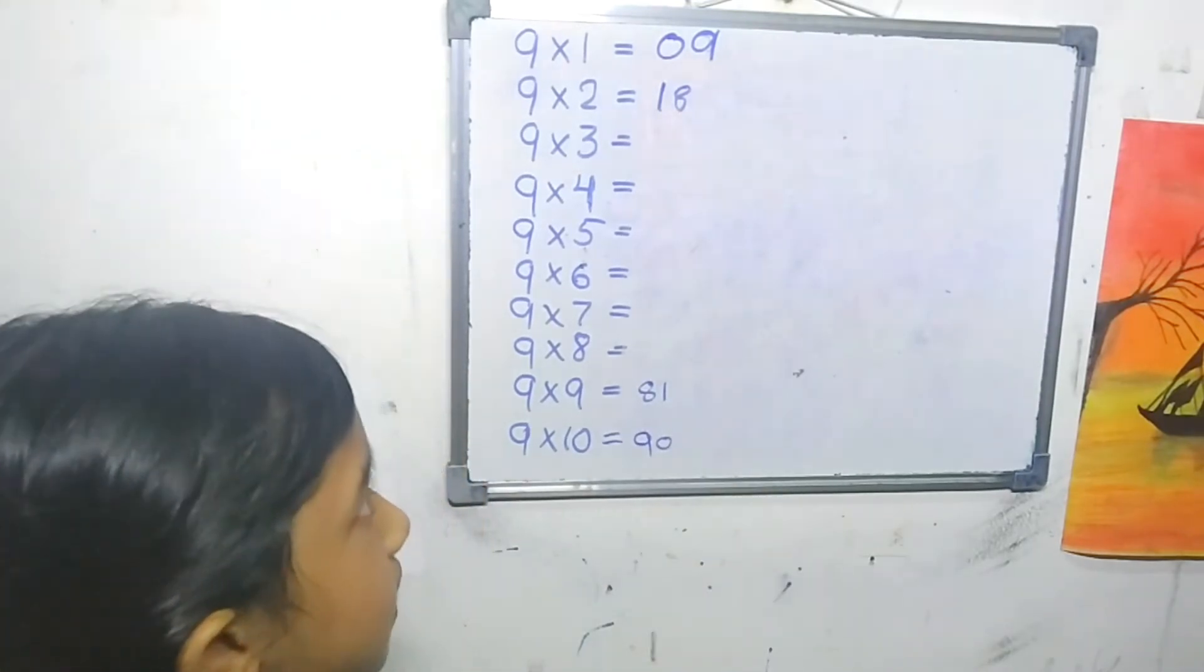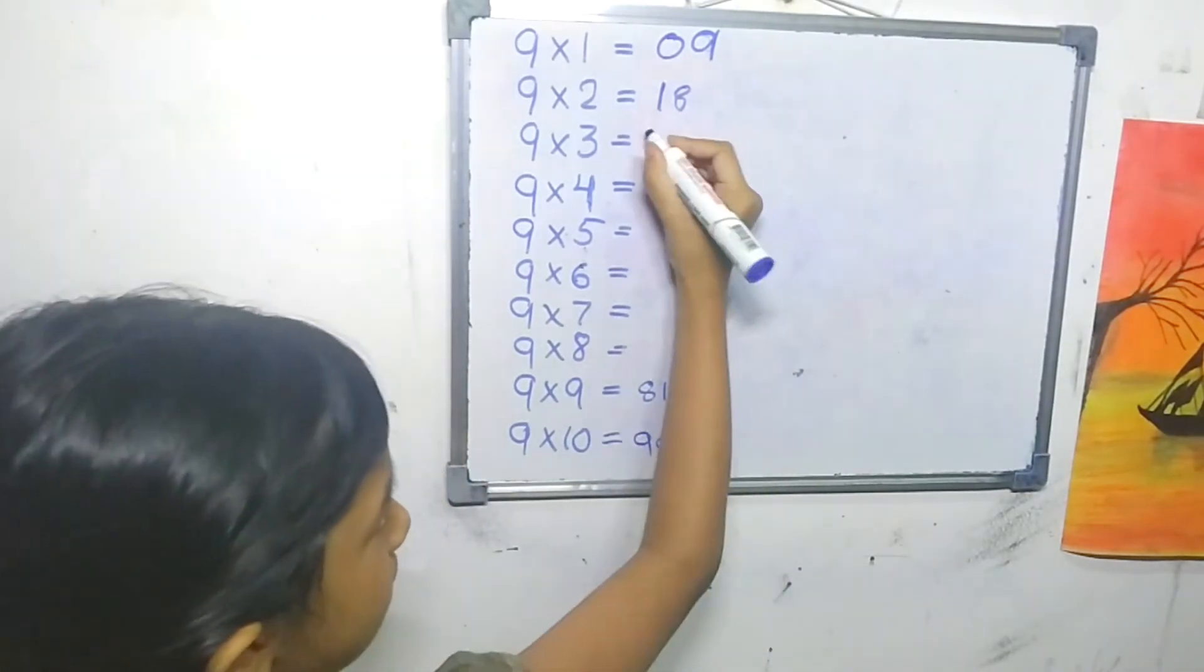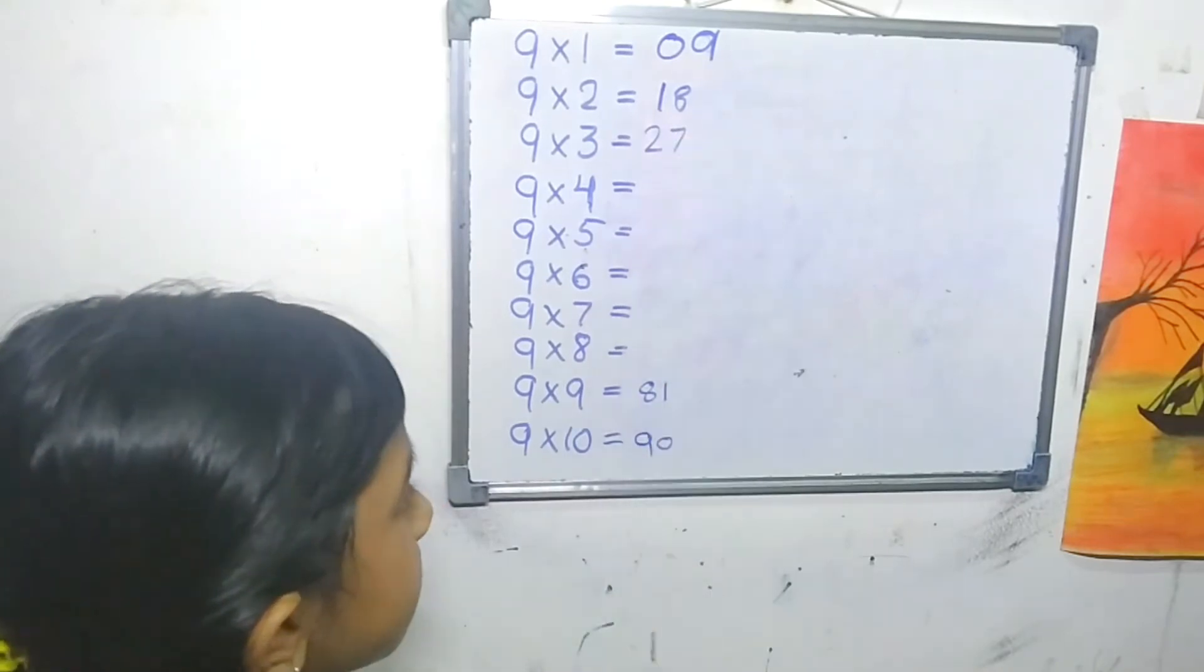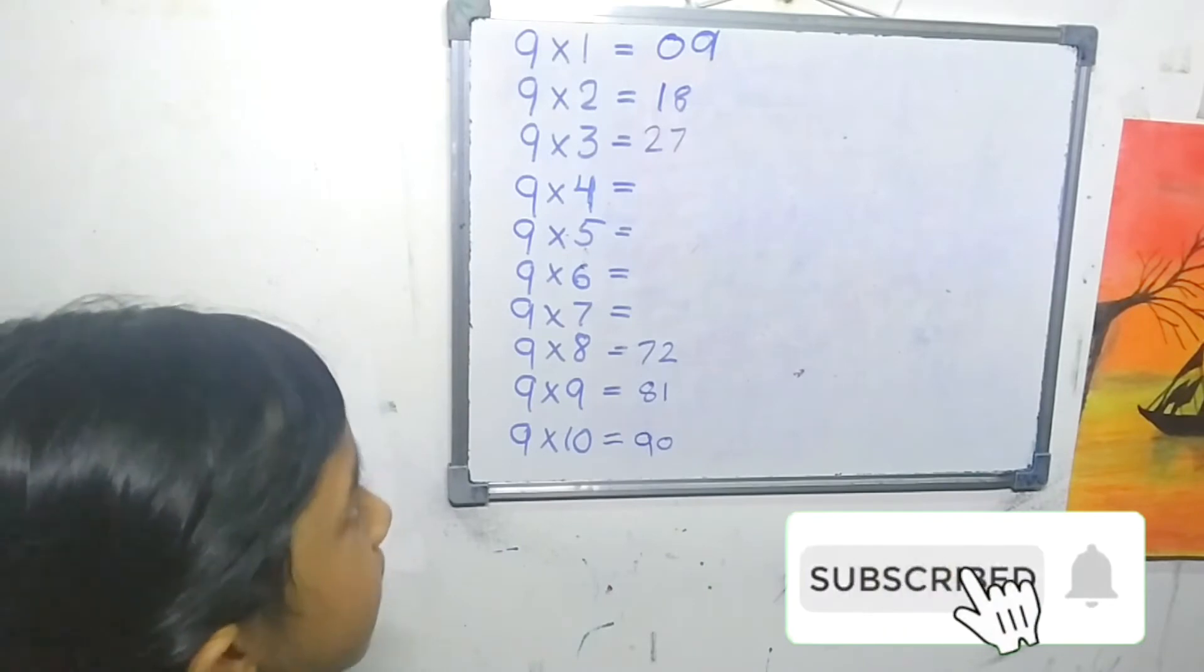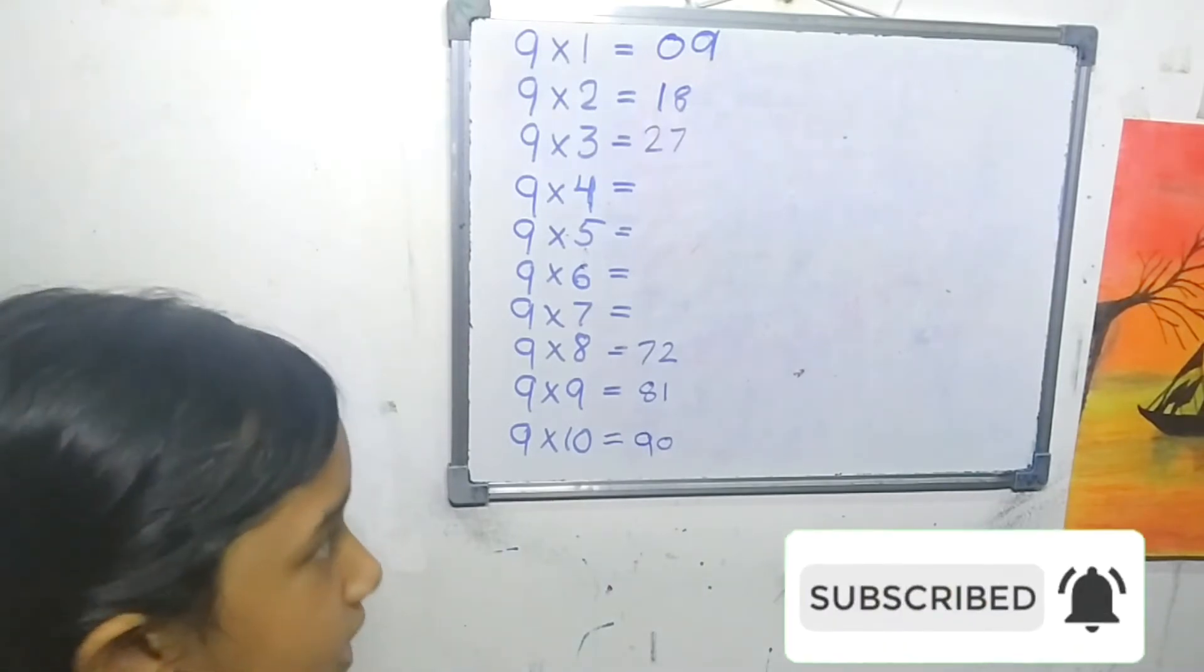9 times 3 is 27. Then 9 times 8 is 72. 9 times 4 is 36.